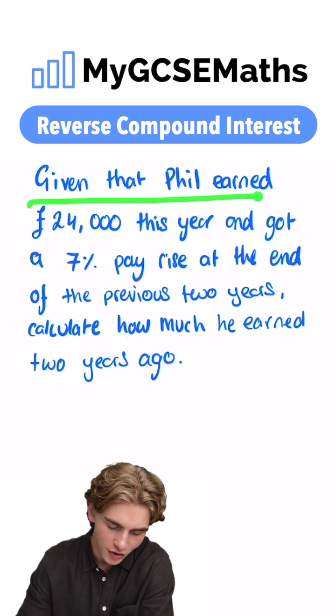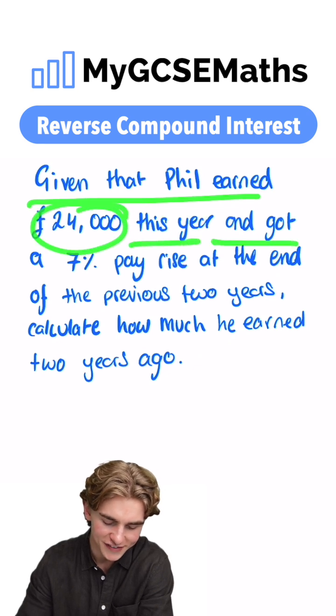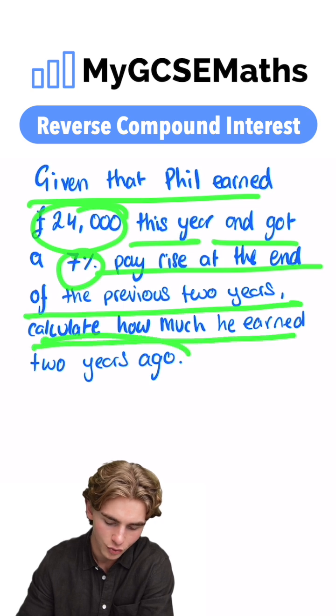It says given that Phil earned £24,000 this year and got a 7% pay rise at the end of the previous two years, calculate how much he earned two years ago.